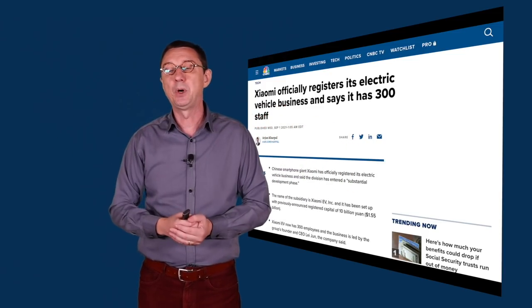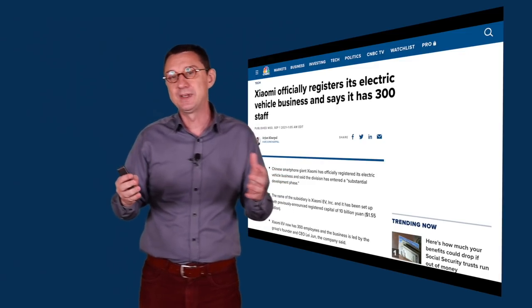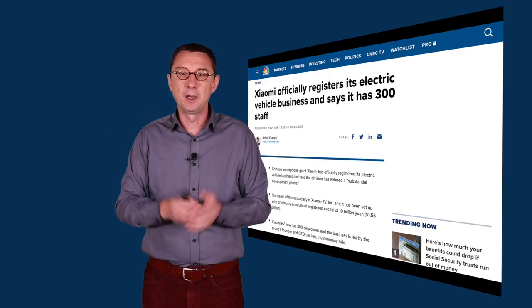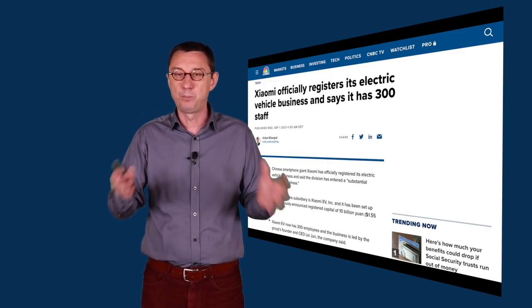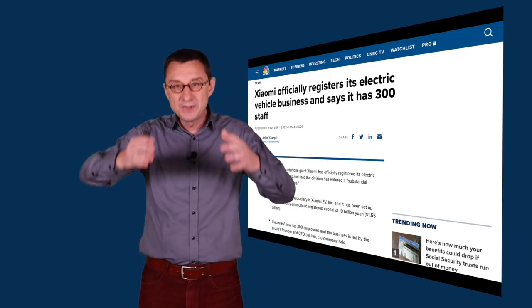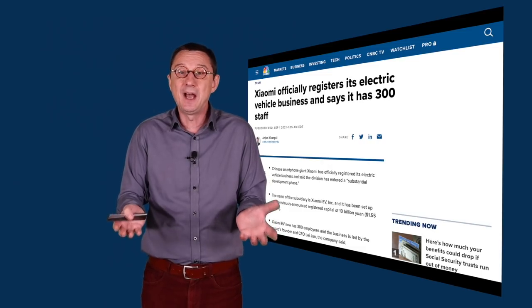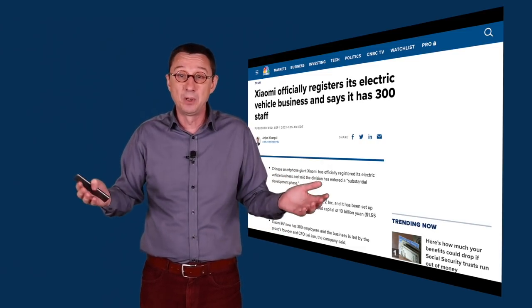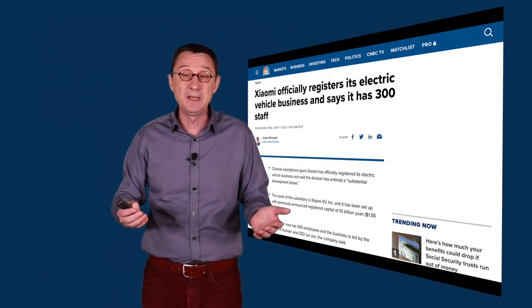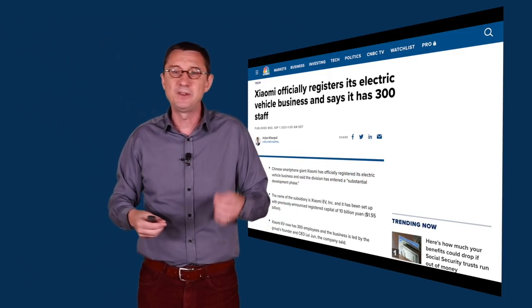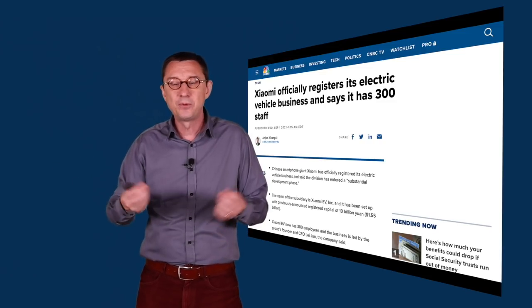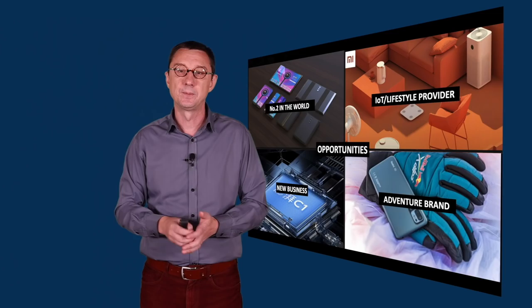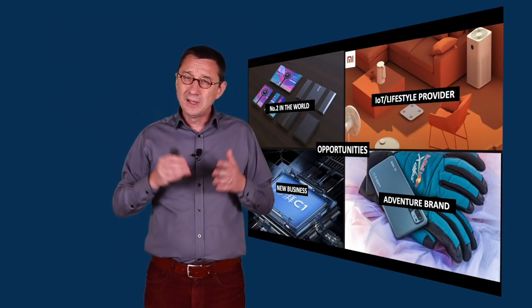But again, this is going to be built with partners. Now, the big difference is that they're not building a car because everybody's building a car. They're building a car because this is one of the products that is part of this Internet environment, this IoT connected environment, this lifestyle environment that people also want to use on a daily basis. So it's just a product, whether it's an air conditioner or a car for Xiaomi. That doesn't matter as long as it's connected through the phones.